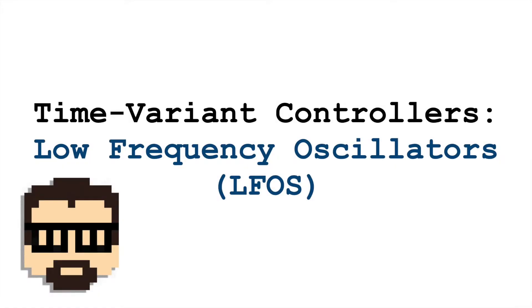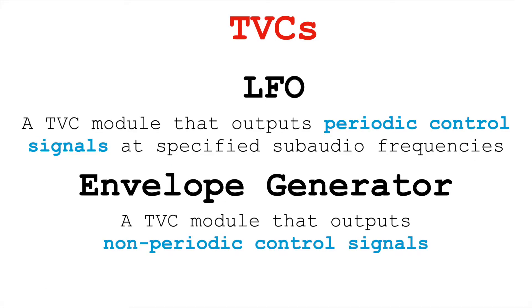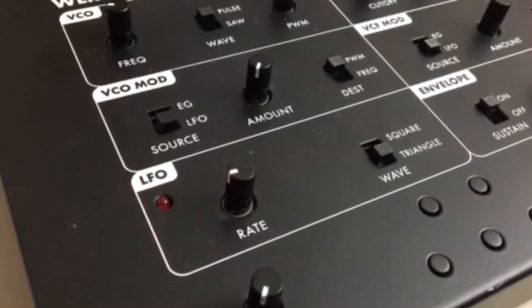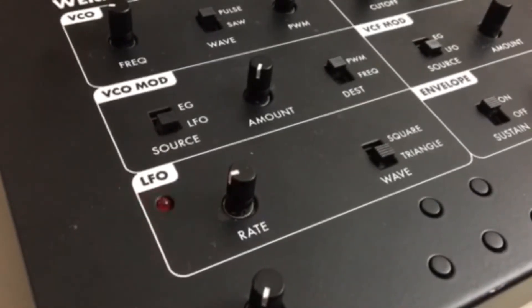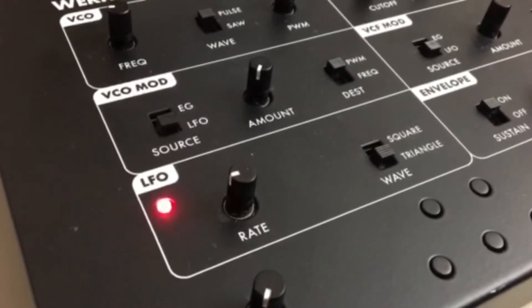In this video, I'm going to talk about time-variant controllers, focusing on LFOs — Low Frequency Oscillators. Low Frequency Oscillators generate periodic control signals, unlike envelope generators, which generate non-periodic control signals. Since this control signal is periodic, it's going to have a pattern that constantly repeats over time.